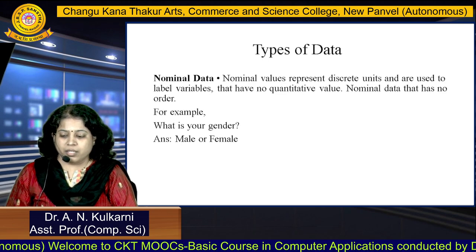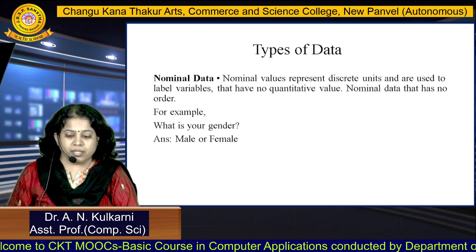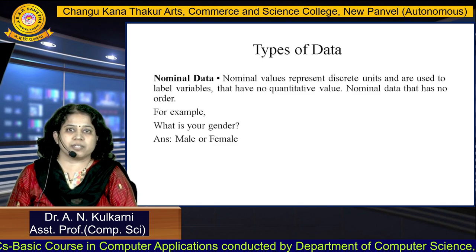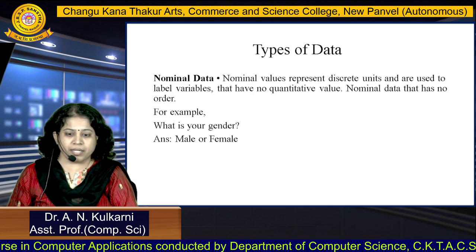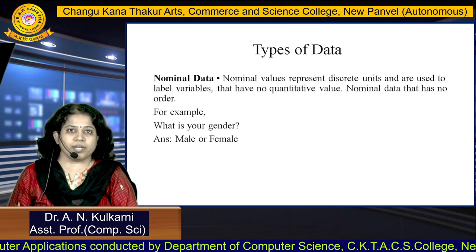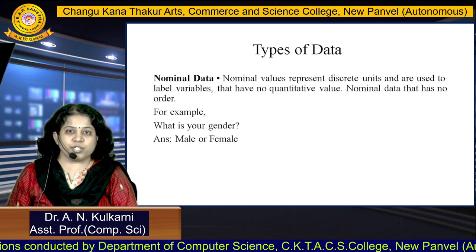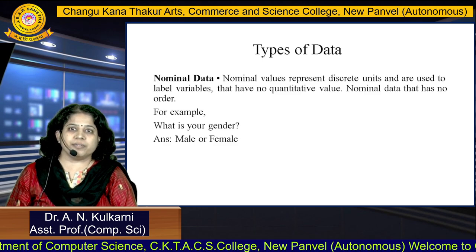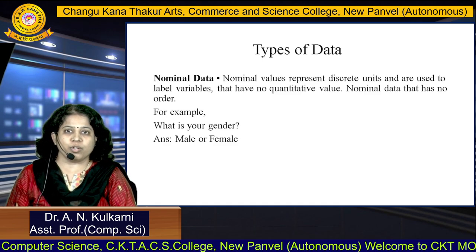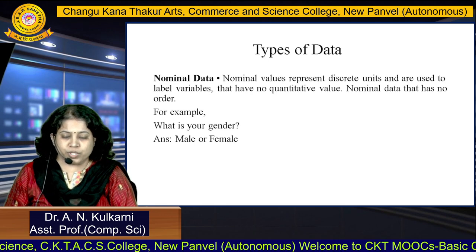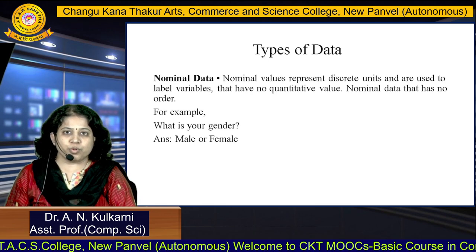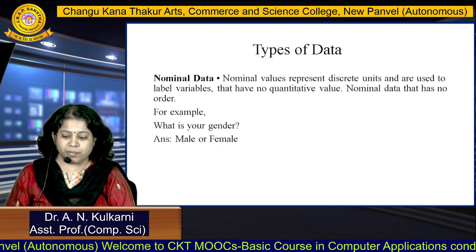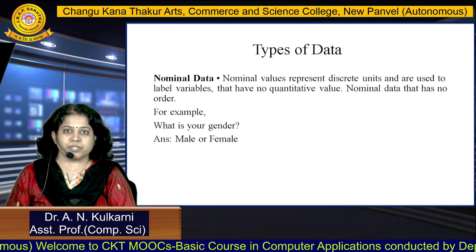Now, see nominal data. Nominal values represent discrete units and are used to label the variables that have no quantitative value. This is the main thing about nominal data — it comes under qualitative data type and has no order. For example, the question 'What is your gender?' — the answer may be male or female. Here we are using male or female for labeling, which is qualitative type. So nominal data comes under qualitative.